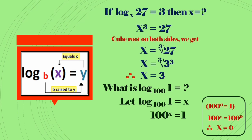So 100^x = 100^0, therefore x = 0, because if the bases are equal then the exponents are also equal. So log(1) for any base is zero.